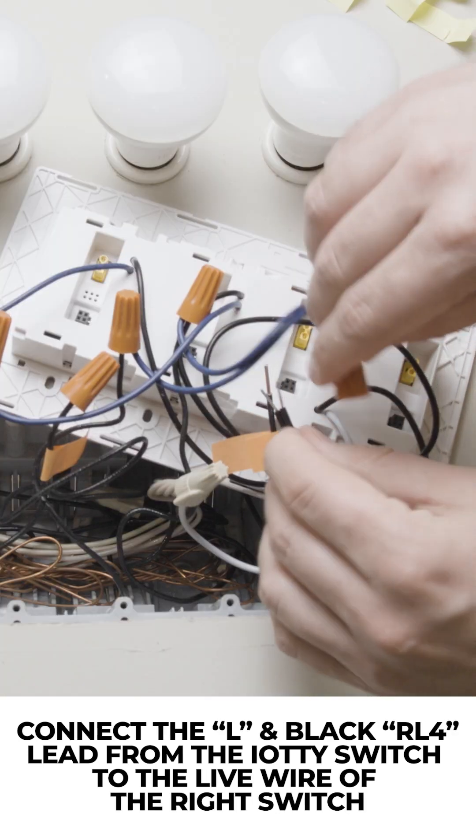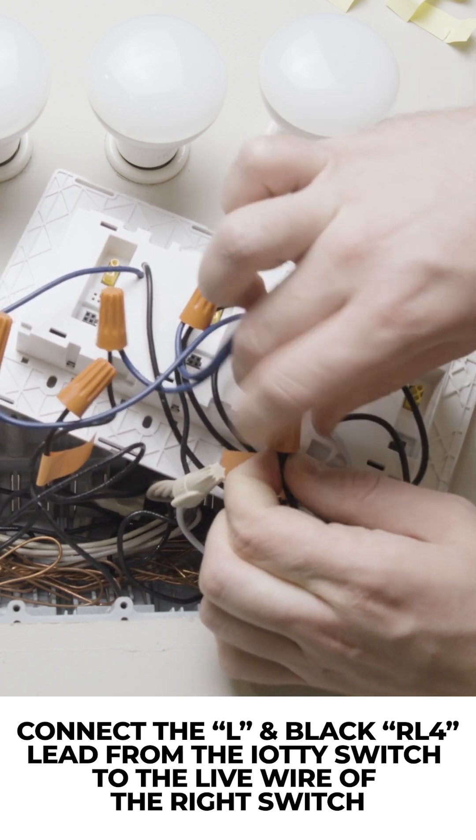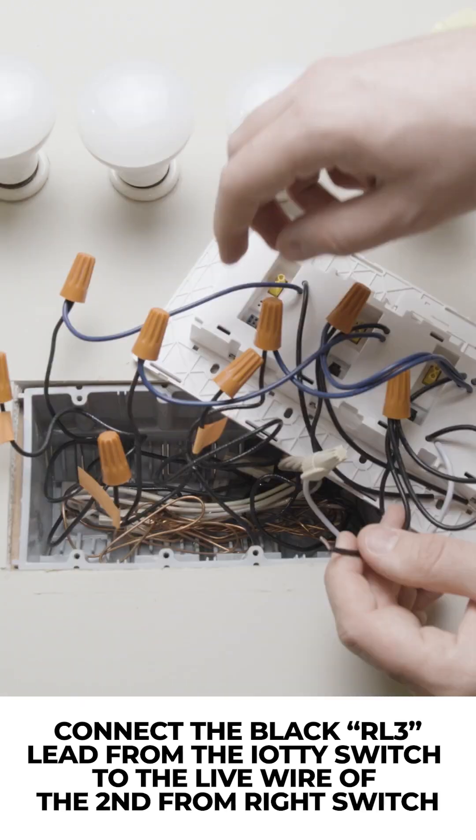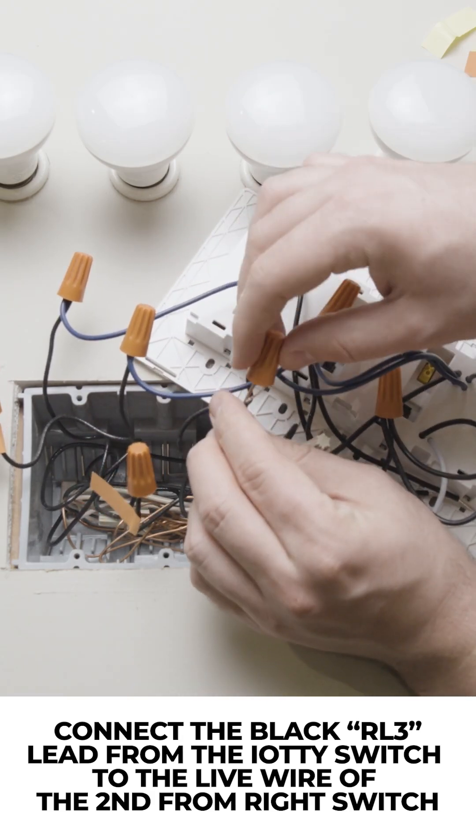Connect the L lead and the Black RL4 lead of the IOTI switch to the live wire of the right switch. Connect the Black RL3 lead of the IOTI switch to the live wire of the second from right switch.